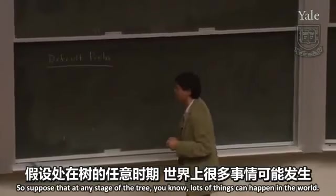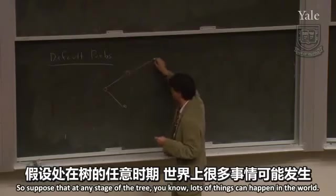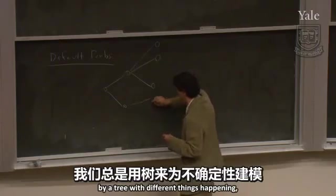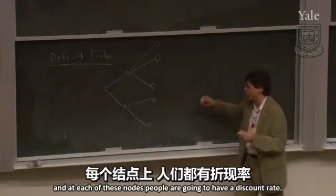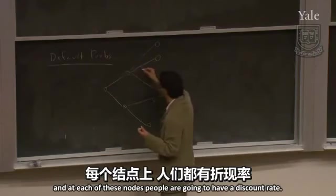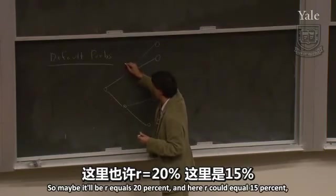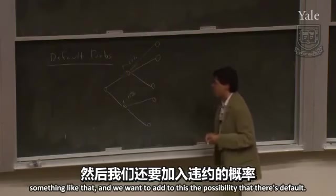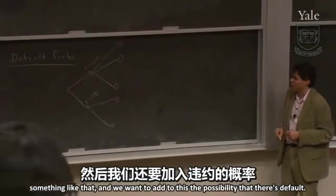Suppose that at any stage of the tree, lots of things can happen in the world. We're always going to model the uncertainty in the future by a tree with different things happening, and at each of these nodes people are going to have a discount rate. Maybe it'll be R equals 20 percent here, and R equals 15 percent there. And we want to add to this the possibility that there's default.